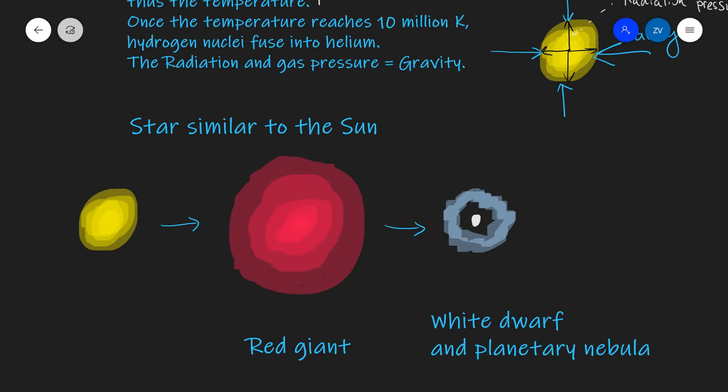A star of similar mass to the sun, after it runs out of its fuel, is going to turn into a red giant and then it will turn into a white dwarf, and it may have a planetary nebula. A planetary nebula has nothing to do with planets — it is just some of the remaining matter that's been left over from the death of the red giant.